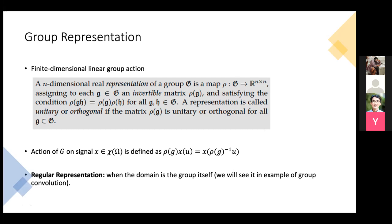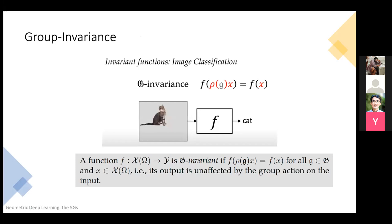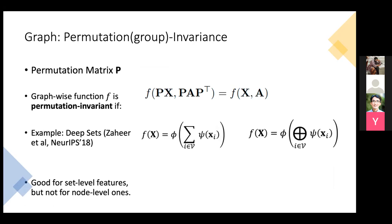The question arose about whether the group-to-matrix mapping needs to be one-to-one. The presenter noted this definition from Professor Bronstein's book doesn't explicitly have constraints like one-to-one mapping. Invariance is only good if you care about global-level features, because you lose lots of information with pooling operations like global average or max pooling. If you care about node-level features, you need something more.